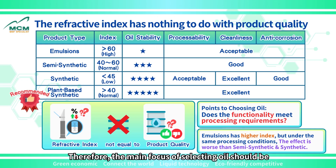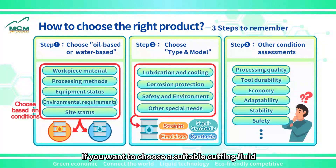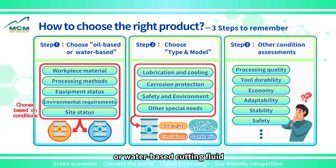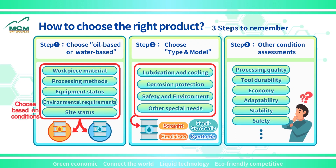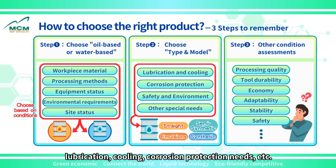Therefore, the main focus of selecting oil products should be whether the functionality meets the processing needs. If you want to choose a suitable cutting fluid, you must first decide whether to choose oil-based or water-based cutting fluid based on various conditions in the field. Then choose the type and model you need based on lubrication, cooling, and corrosion protection needs.